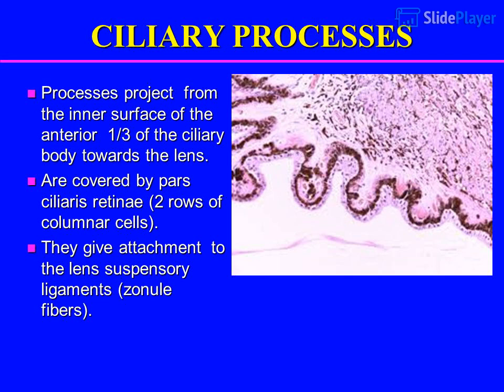Ciliary processes project from the inner surface of the anterior one-third of the ciliary body towards the lens. They are covered by the pars ciliaris retinae, two rows of columnar cells. They give attachment to the lens suspensory ligaments, known as zonular fibers.